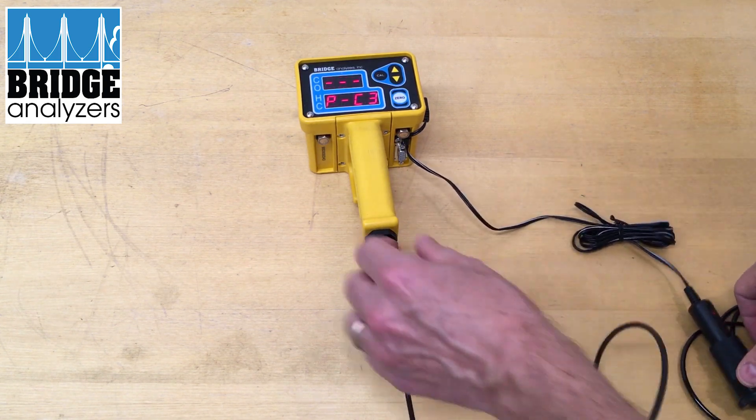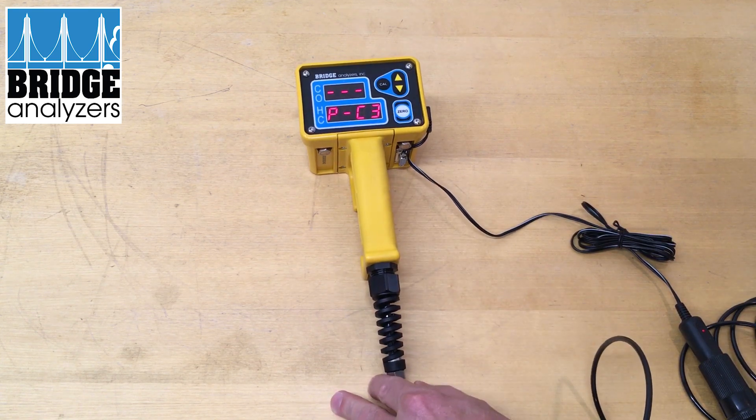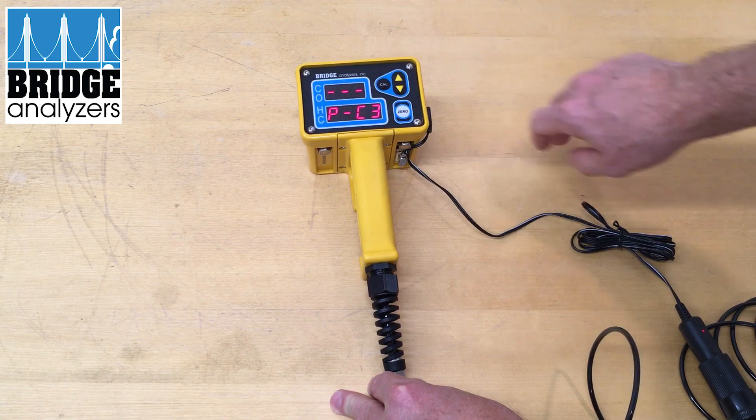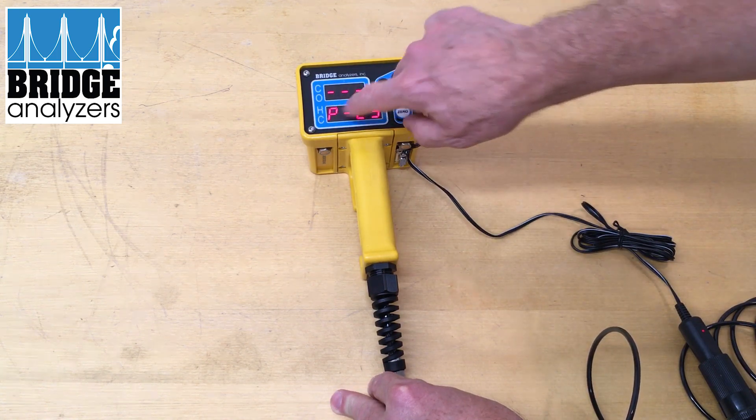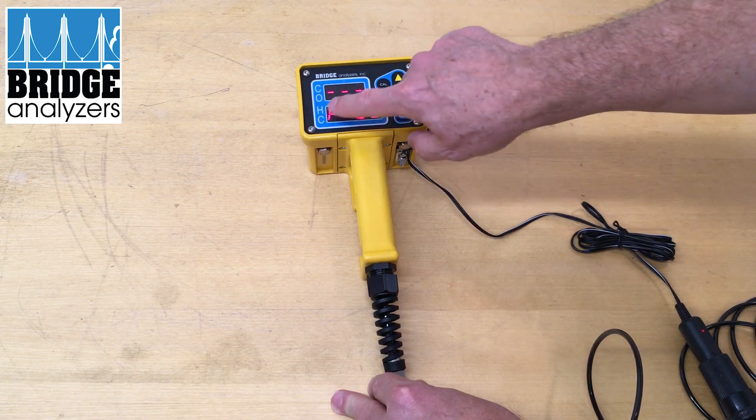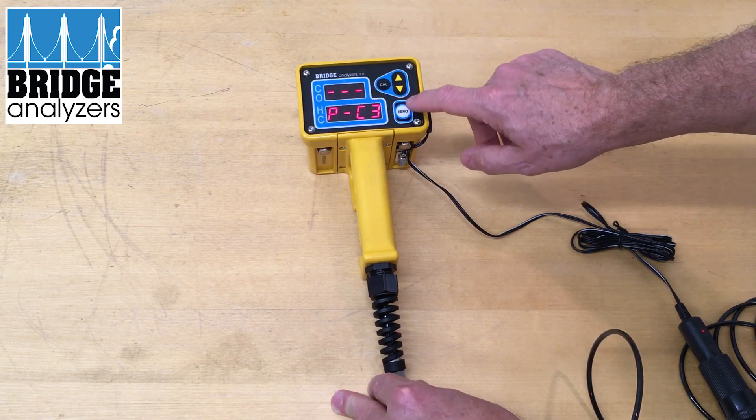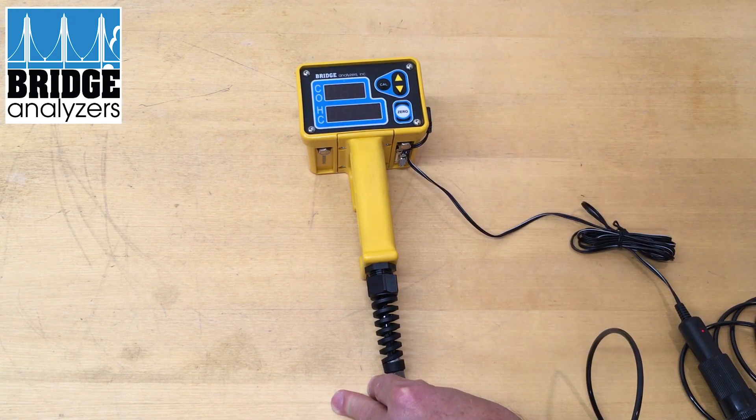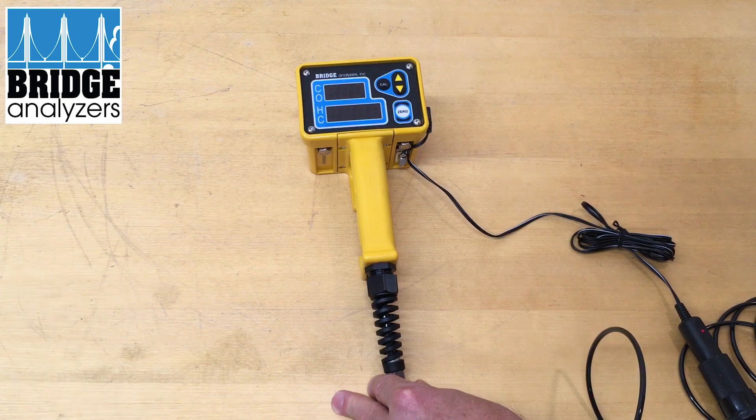So you plug in the 12 volt supply and initially the analyzer comes up with dashes on the carbon monoxide and then the fuel of interest for the hydrocarbon. In this case it's been identified for propane. I press the zero button until I see the display flashing between blank and dashes.